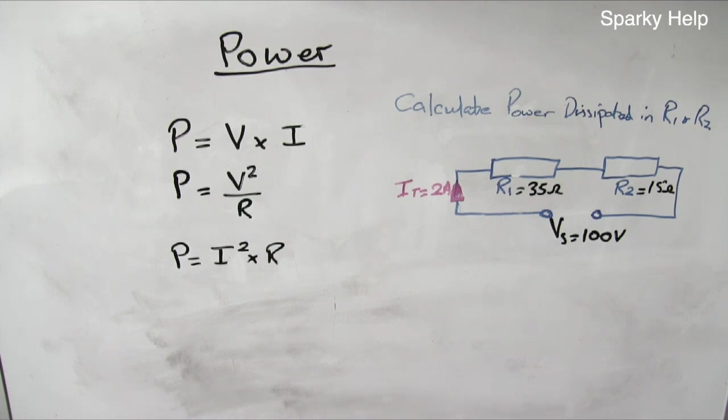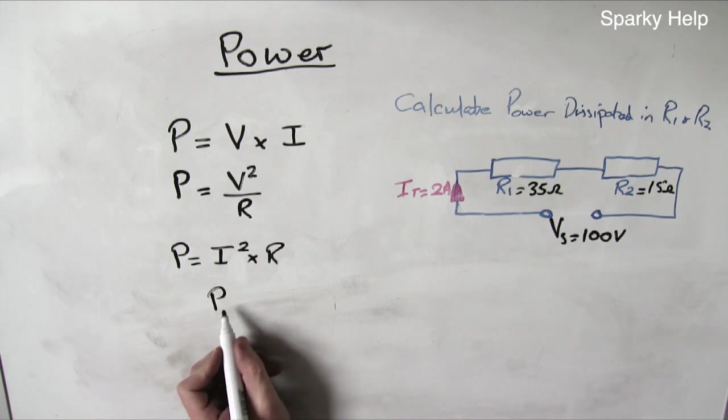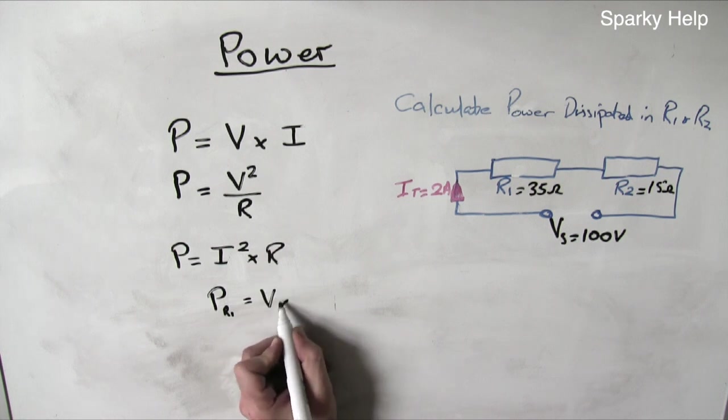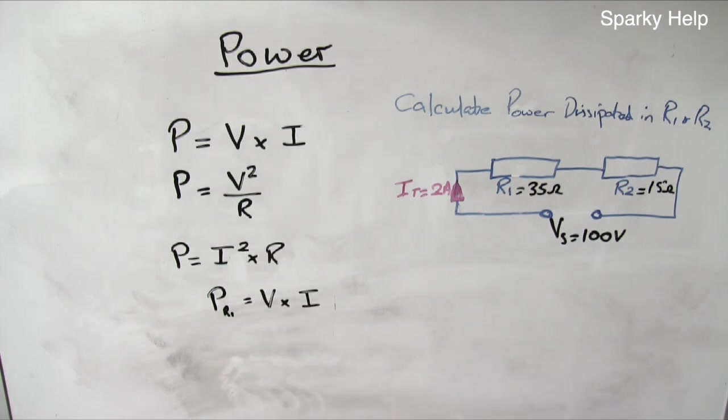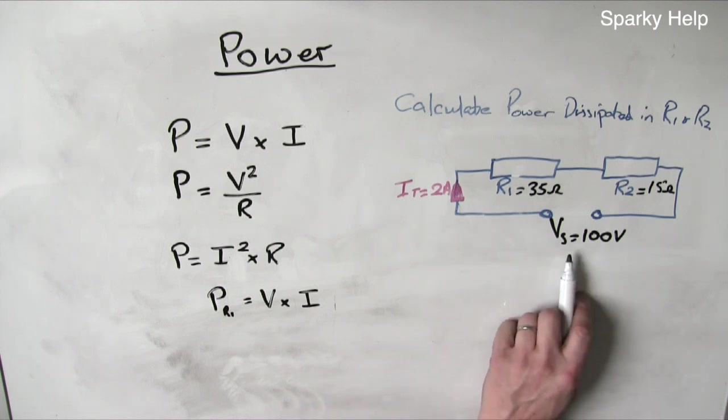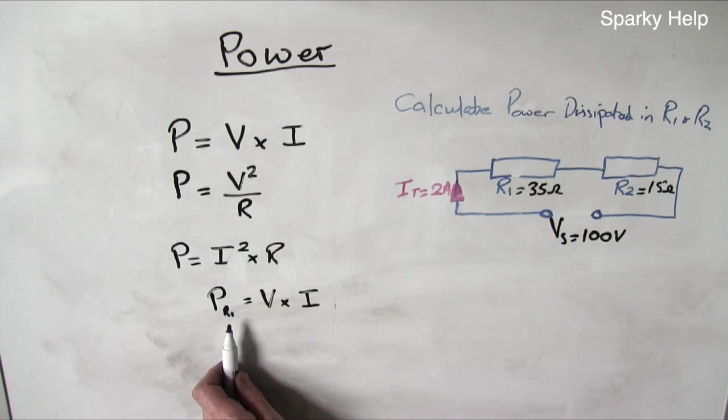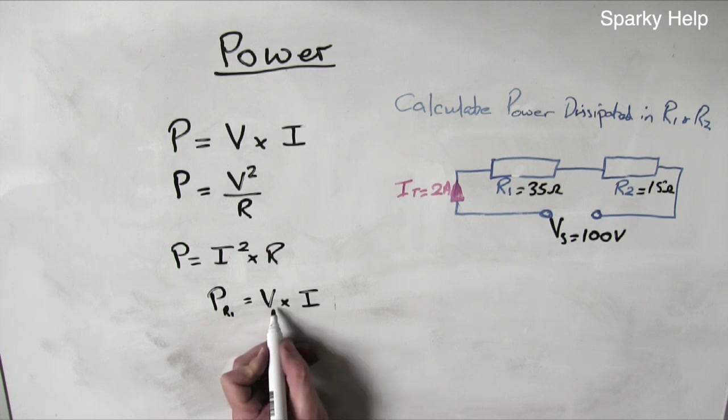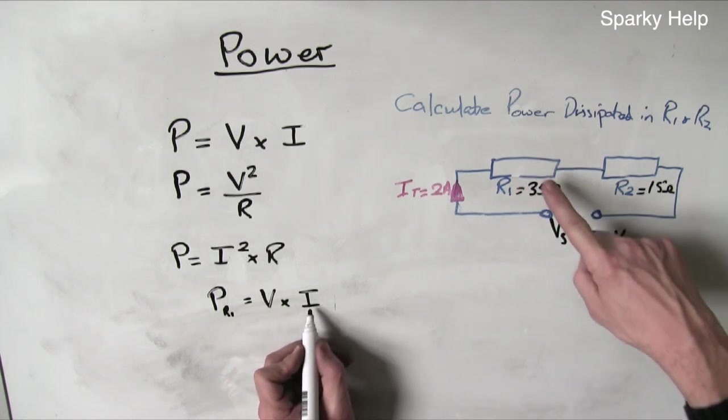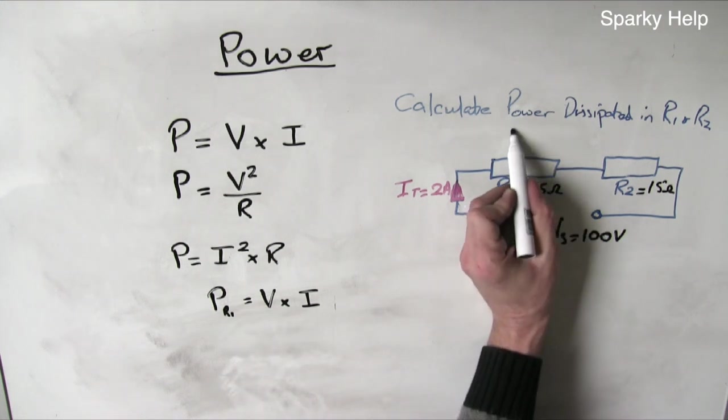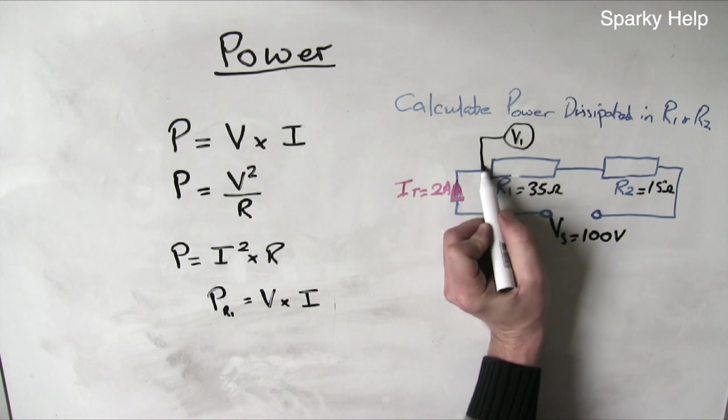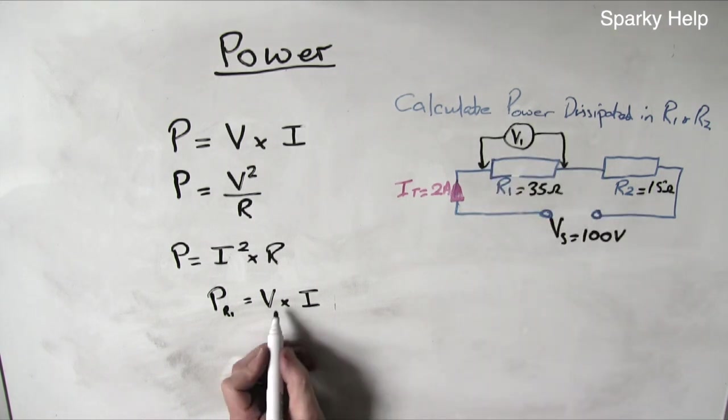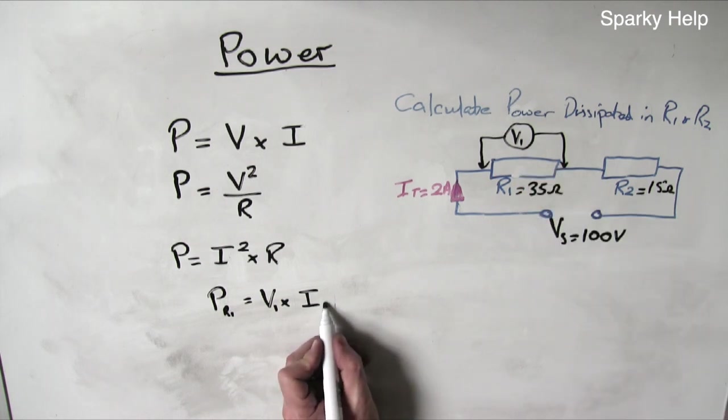So let's try it again, but this time use one of the other formulas. Let's do power equals V times I. So we want to do the power dissipated in R1, but we want to use V times I. So which V do we use? Well, we have Vs, but we want to find the power dissipated in R1. So in order to work this one out, we need to find the voltage across this resistor. In order to find the power dissipated in this resistor, and using this formula, it needs to be the voltage associated with that and the current passing through that. So effectively, we need to find V1 across that resistor. So V1, and then the current passing through that resistor, which is IT.